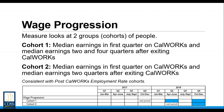Then we follow that same cohort that exited in Q4 2017 and determine the EDD-reported wages for that group for the second quarter after exit, and determine the median income for that period. Then the same process is applied to derive the median wage for that Q4 2017 exit cohort in the fourth quarter after exit. We will have median wages derived for that cohort at three separate time periods: at entry, two quarters after exit, and four quarters after exit.